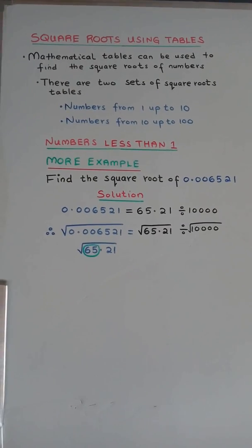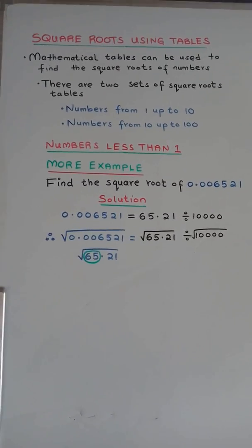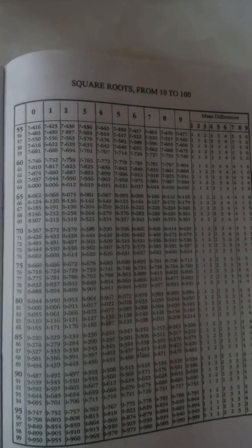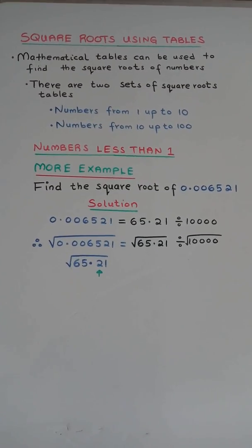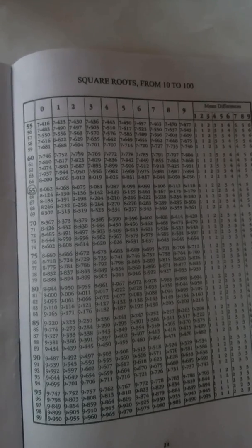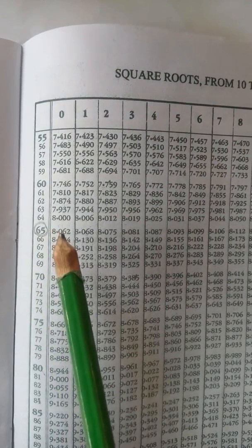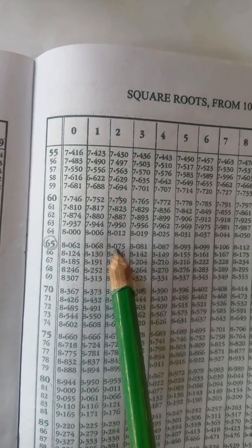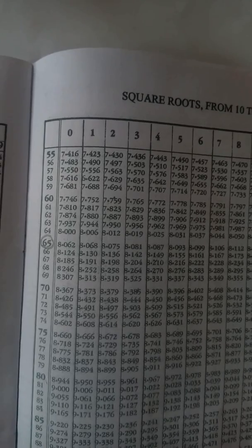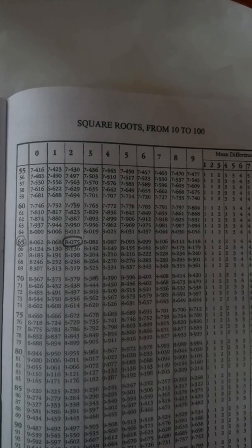Consider the square root of 65.21. The first two digits are 6 and 5 — 65 is found in the first column. The third digit is 2. Starting from the first column, we find 2: 0, 1, 2 — which is equal to 8.075.